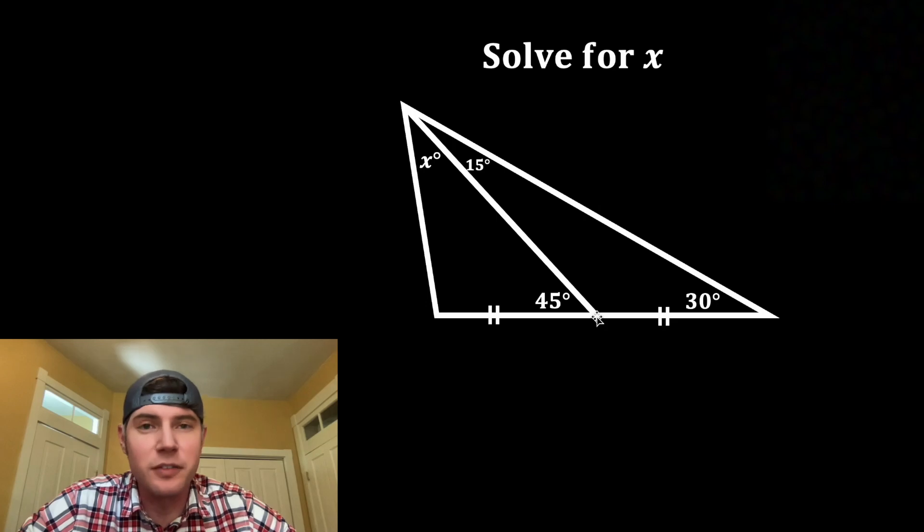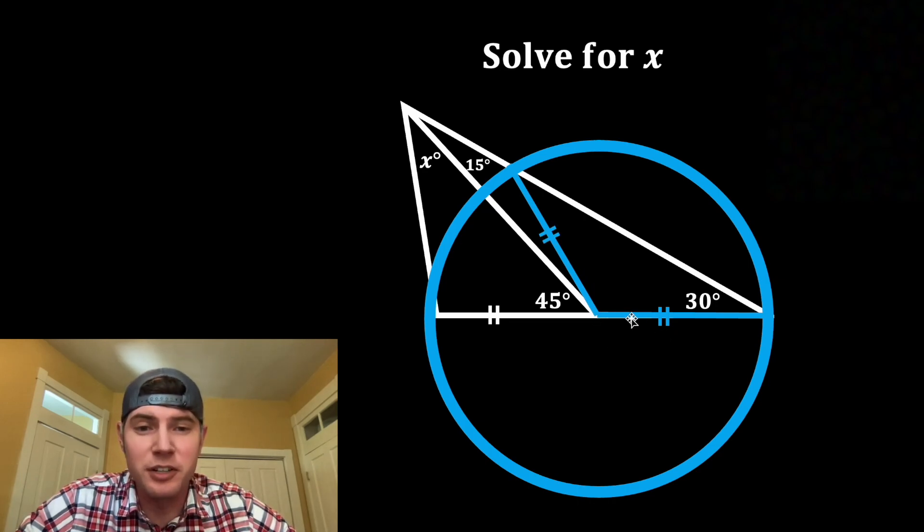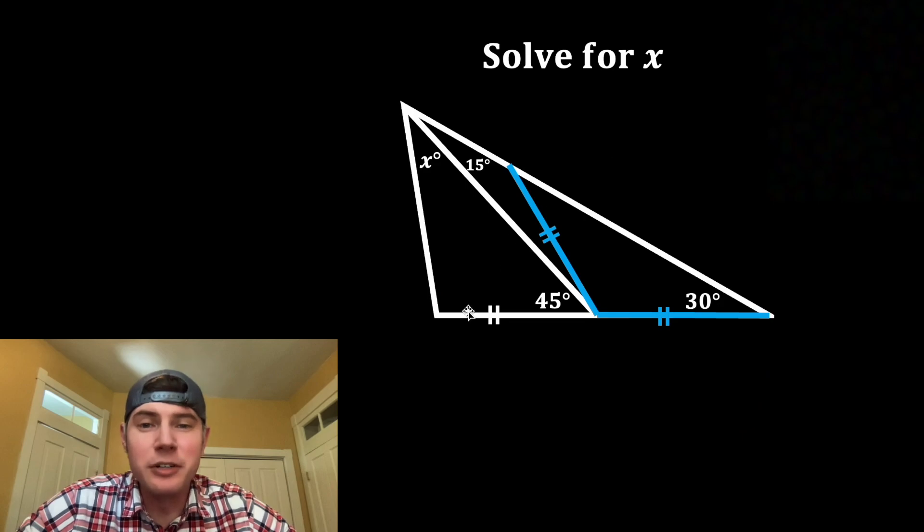Starting from the vertex of this angle, let's draw out this blue segment and construct a circle with that as the radius. And let's find where this circle intersects this. Let's connect this intersection point to the center of our circle. This is another radius of the circle, so it's equal to this segment right here. And now we don't need this circle anymore.